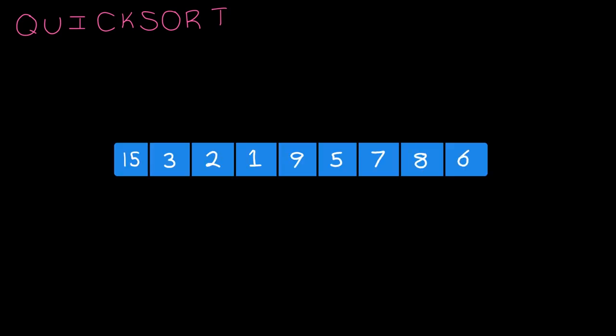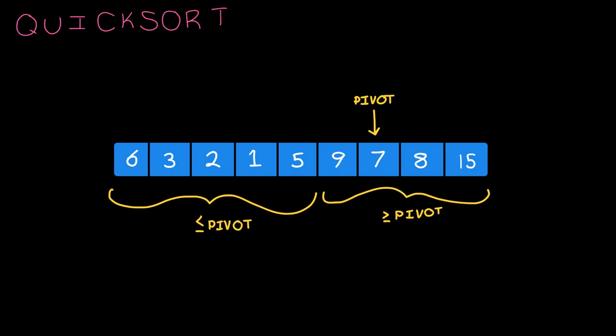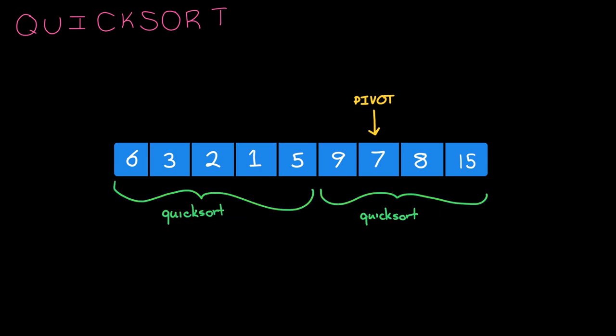The way quicksort works is we take this array of integers and we pick some element to be the pivot element. For now we'll just assume we're going to pick the pivot element randomly. What we do is we walk through the array and swap elements around such that all elements less than the pivot come before all elements bigger than it. That creates some sort of natural division in the array. Then we repeat this process and apply this algorithm to the left portion and the right portion, over and over again, until eventually our array becomes sorted.